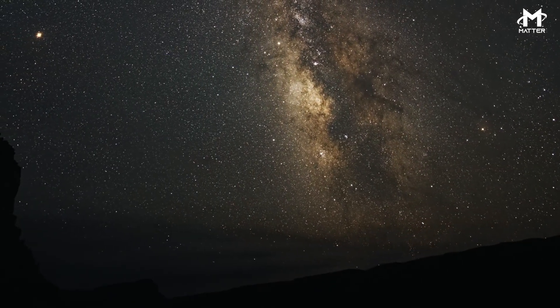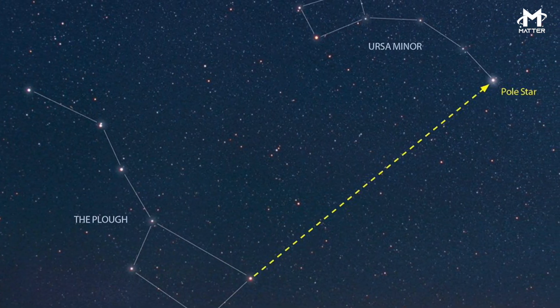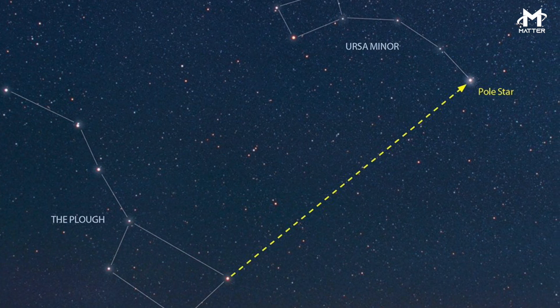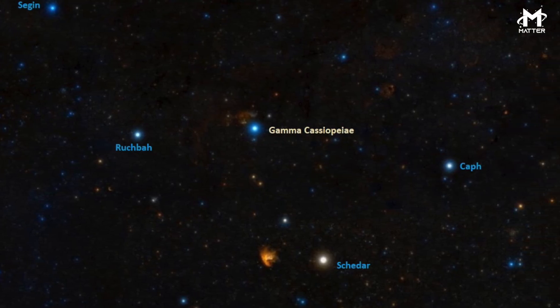However, this change will be extremely slow. We can still rely on Polaris to point us in the right direction for at least the next thousand years. And after which, a new star, Gamma Cephei, will take its place as the North Star.